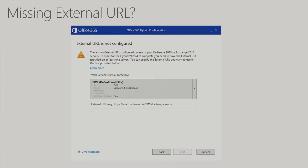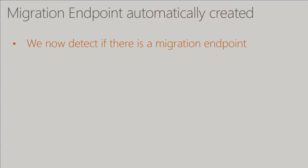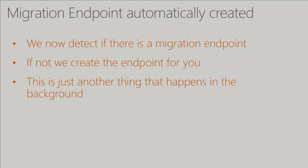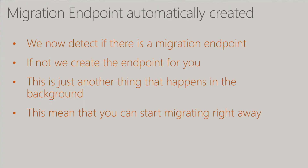For example, a missing external URL for EWS — you need that for free/busy. If it's not there in the wizard, instead of giving you an error saying 'go set it,' we try to get you to fix it right there. We also now manually create your migration endpoint as part of the wizard. We do a test migration server availability command to confirm it was successfully created and give you those stats in the log so you can figure out why it failed if it did.